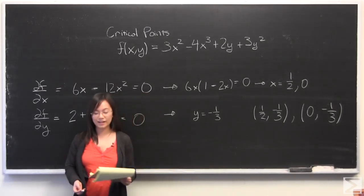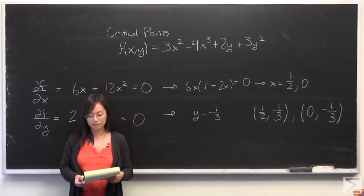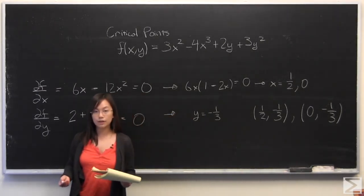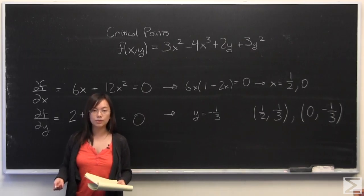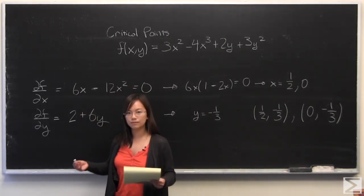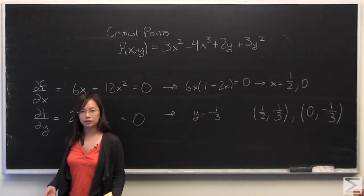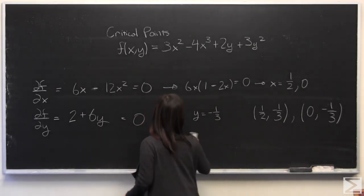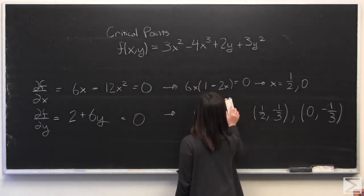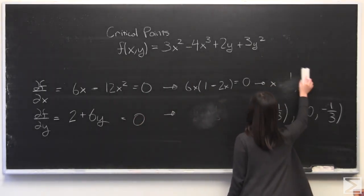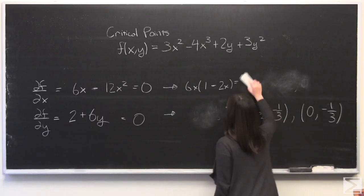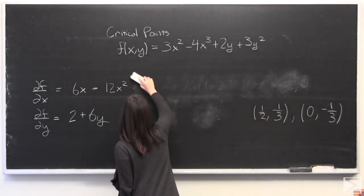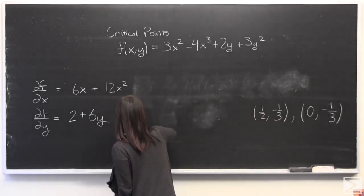We're not quite done yet, because the problem also said you have to identify what kind of points these critical points are — so saddle, minimum, maximum, degenerate, et cetera. I will leave the two critical points on the board and then proceed to identify them.